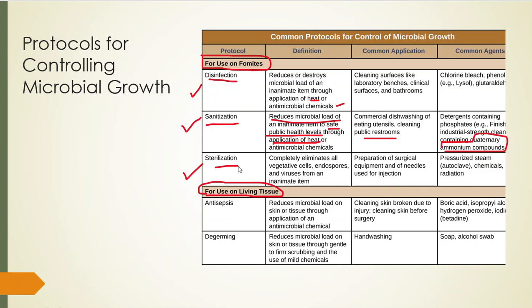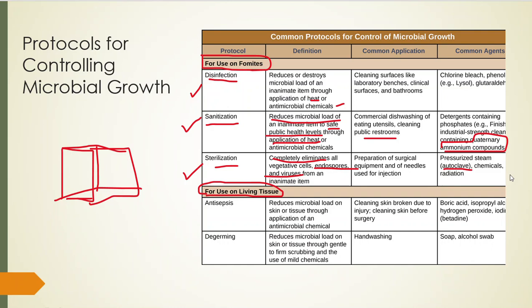Sterilization is totally easy to measure — it completely eliminates all vegetative bacterial cells, endospores, and viruses from an inanimate surface. This is how surgical equipment and injection needles are prepared. They're put in an autoclave — a cabinet with steam under pressure, basically a pressure cooker. Some chemicals and radiation can also be used for sterilization. All of this is for fomites; you cannot sterilize living tissue.